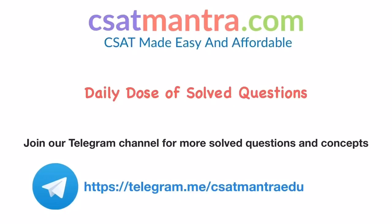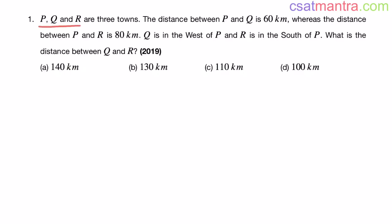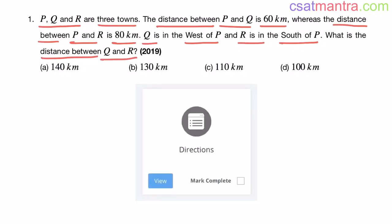P, Q, and R are three towns. The distance between P and Q is 60 kilometers, whereas the distance between P and R is 80 kilometers. Q is in the west of P, and R is in the south of P. What is the distance between Q and R? This question is based on the directions lecture — it was asked in 2019, and in that year two questions were asked from this lecture.